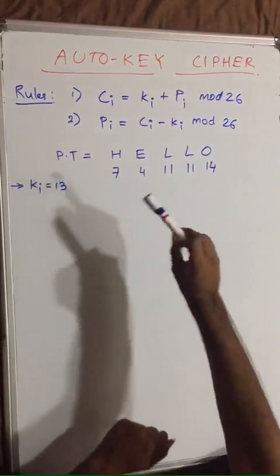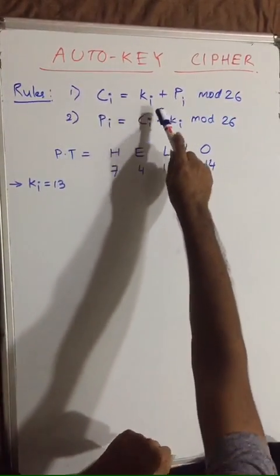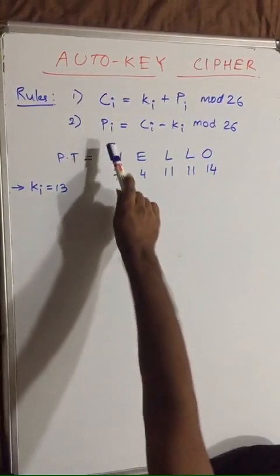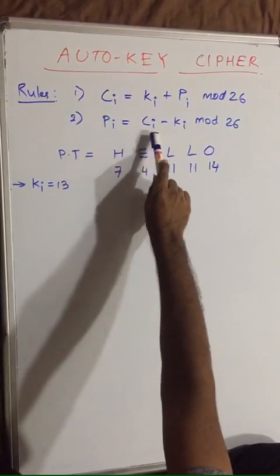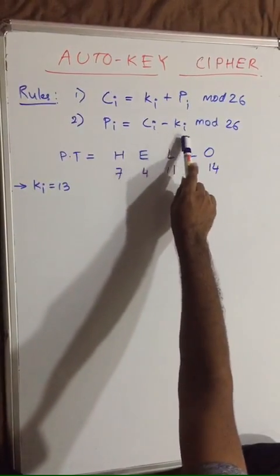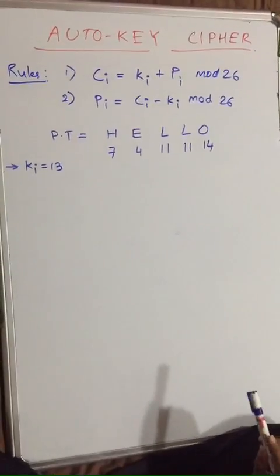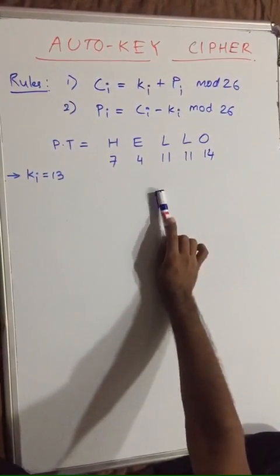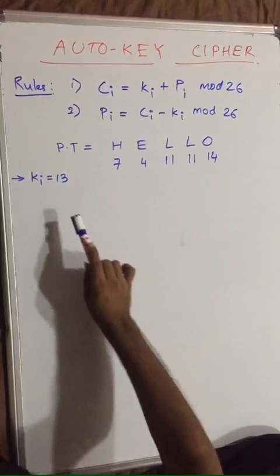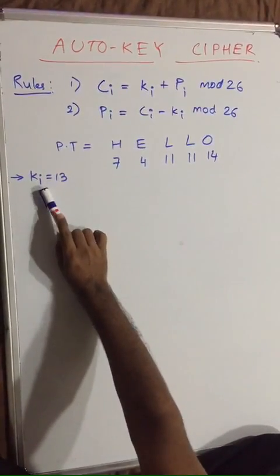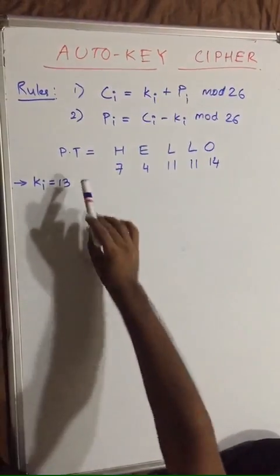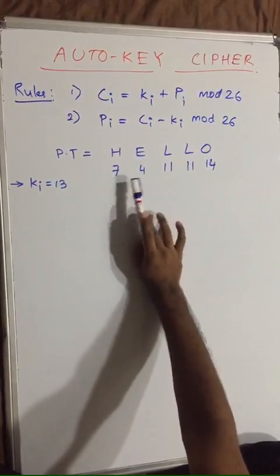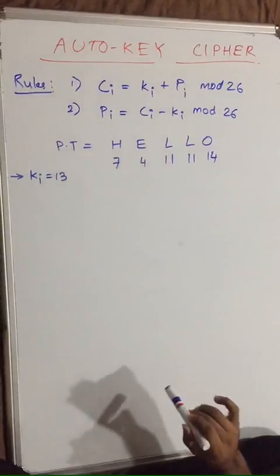In auto-key, for ciphertext the rule we have is Ci = ki + Pi mod 26, and for plaintext we have Pi = Ci - ki mod 26. In this auto-key cipher we are going to use a key stream instead of using a single key, that's why we have ki. Suppose we have a plaintext that is HELLO and its corresponding digits are 7, 4, 11, 11, and 14.